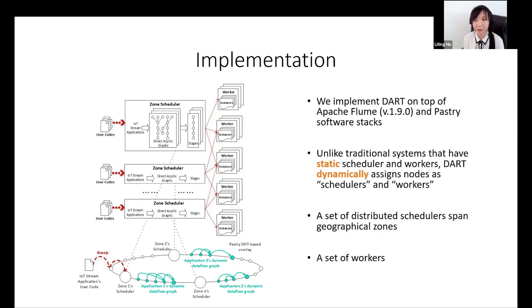We leverage their excellent runtime system routing, substrates, and event transportation layer to implement the DART system. Here is the overview of the DART system implementation. The DART system has two components: a set of distributed schedulers that span geographical zones and a set of workers.